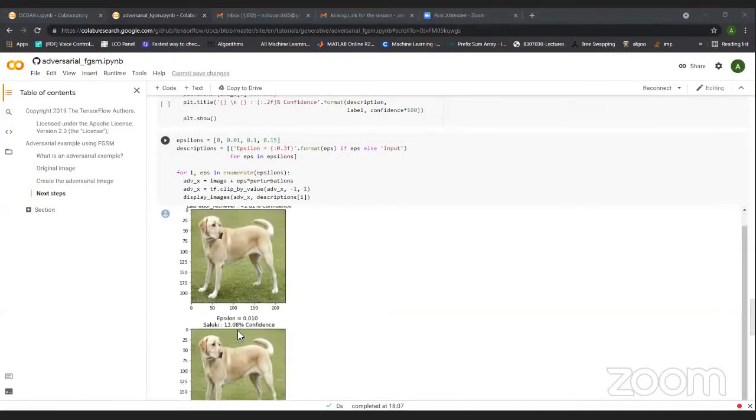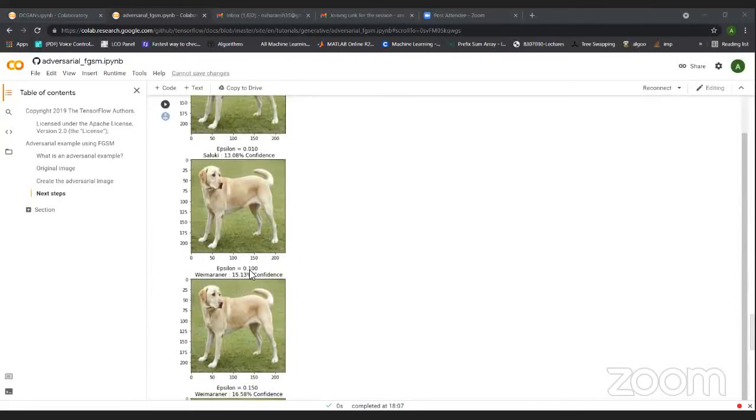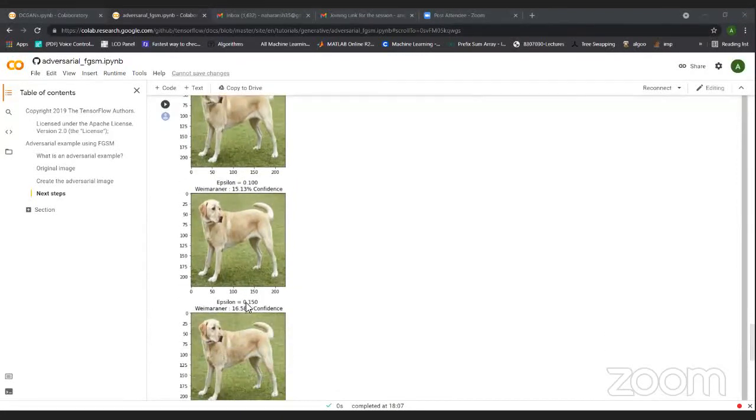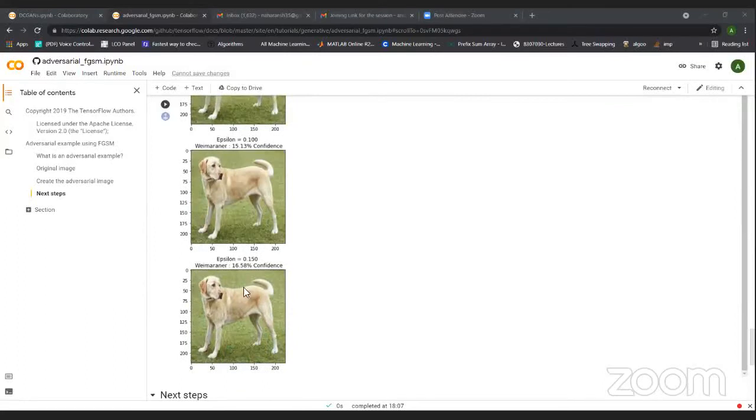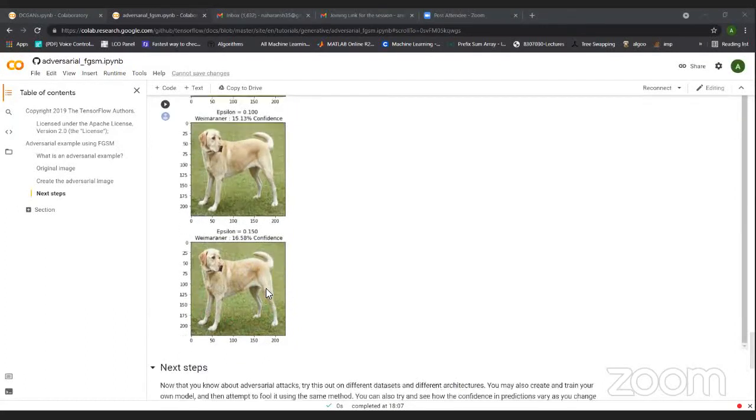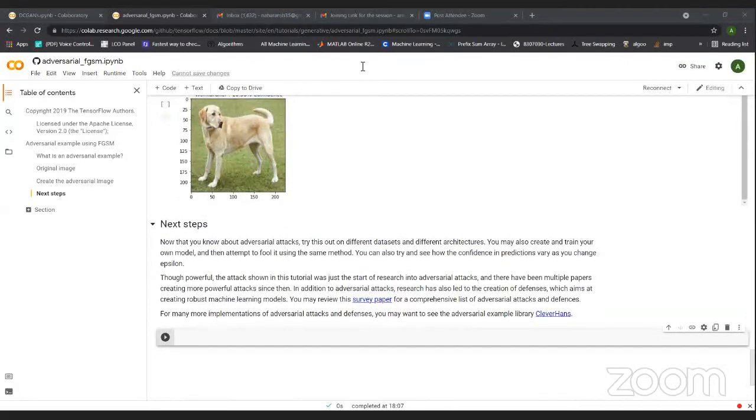And if we increase the epsilon more, it is giving you some different breed of the dog. And if you are increasing the epsilon to 0.150, then it is again giving you the same. So this is how we are forging the adversarial example using the FGSM.